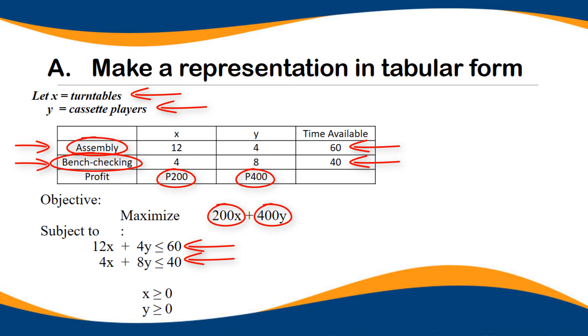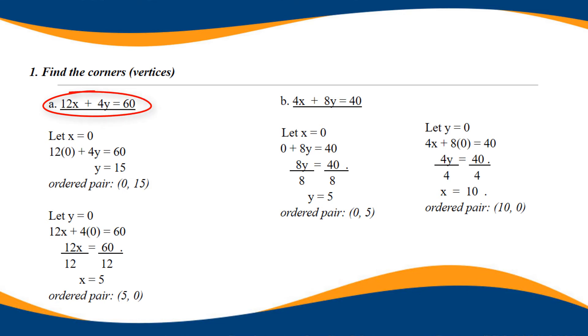Find the corners or vertices. Convert the inequality into an equation. 12X plus 4Y equals 60. Then let X be equal to 0. 4Y equals 60, divided by 4, Y equals 15. Then we have ordered pair 0, 15. Next, let Y equal 0. 12X plus 0 equals 60, 12X equals 60, divided by 12, X equals 5. Then we have the second ordered pair 5, 0.